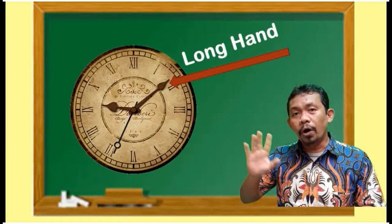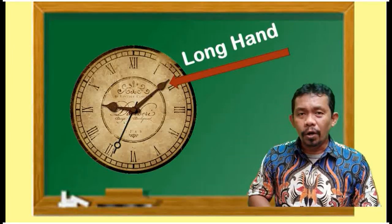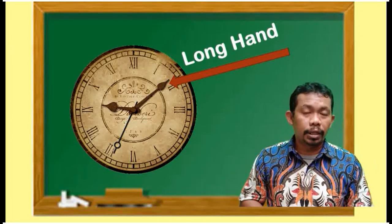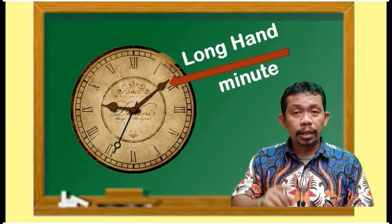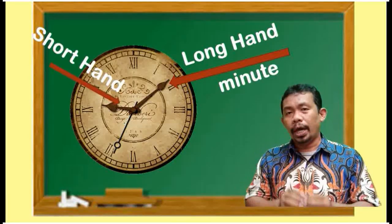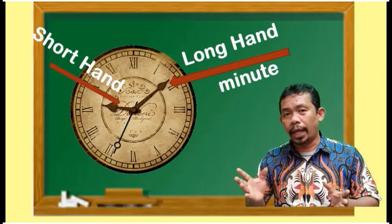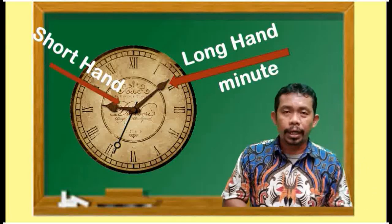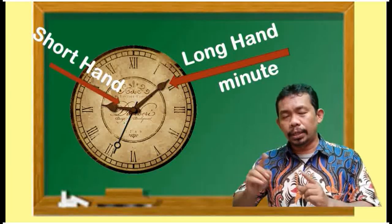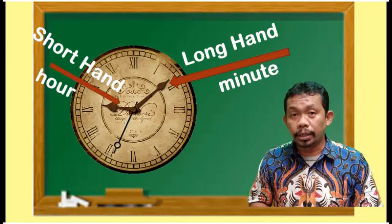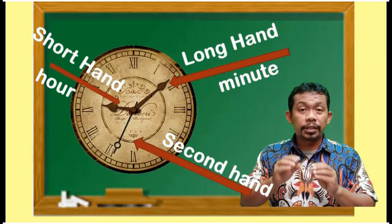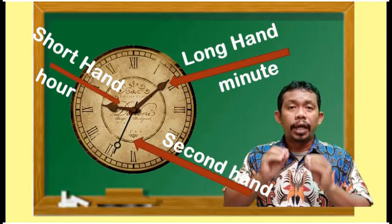The first, we have the long hand. Long hand itu adalah jarum panjang yang biasanya menunjukkan menit. The second, we have the short hand. Short hand itu adalah jarum pendek dan jarum pendek itu biasanya menunjukkan jam.